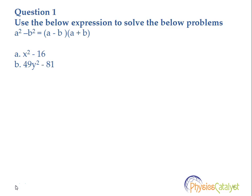Problem number one. Use the below expression to solve the below problems. The expression is a squared minus b squared is equal to a minus b into a plus b. This is also called the identity. We need to solve two parts. First part is x squared minus 16. Part b is 49y squared minus 81.